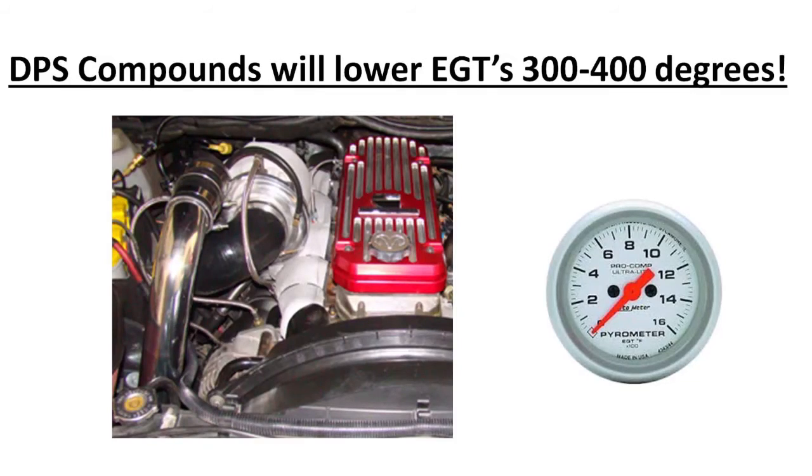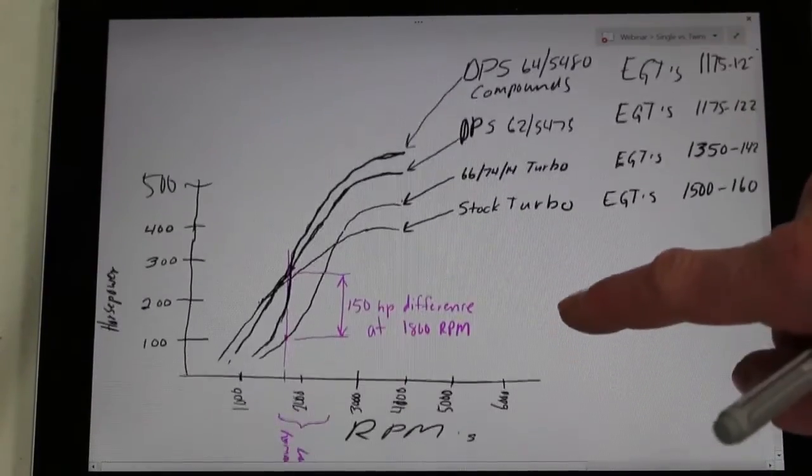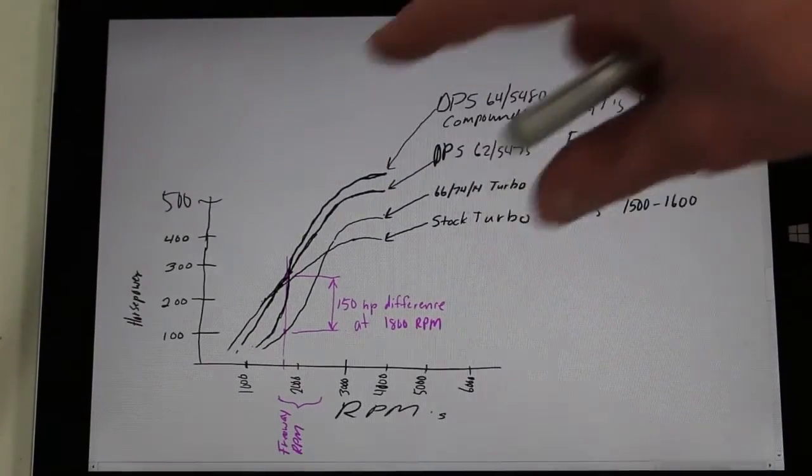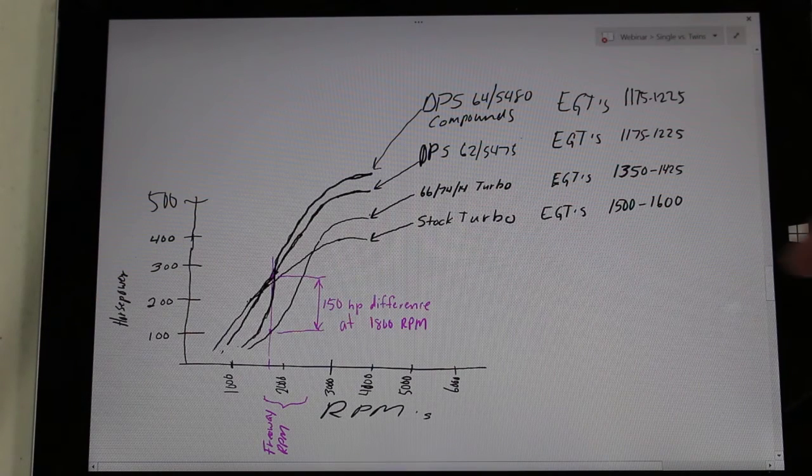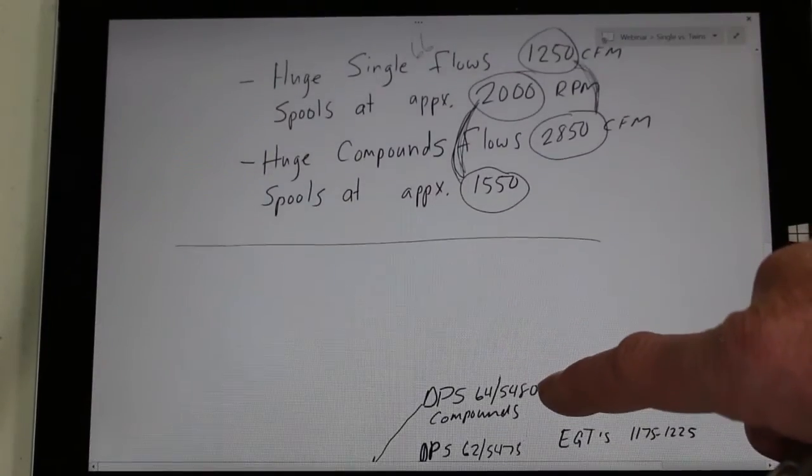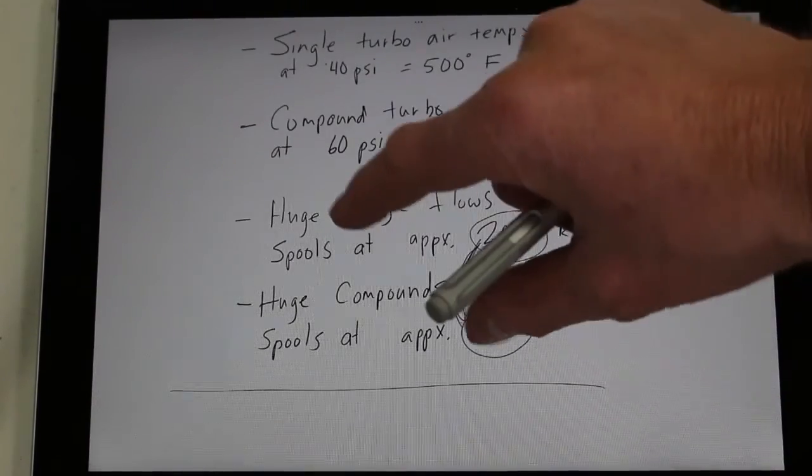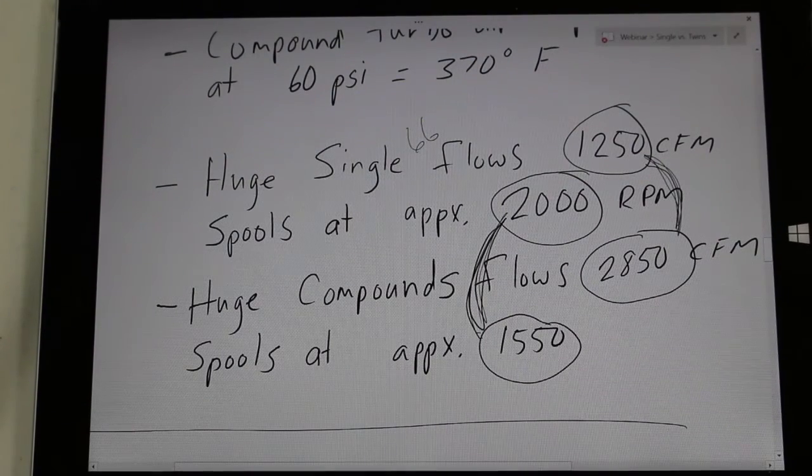The last huge benefit of the compound kits versus a huge single turbo that would even somewhat compete in handling the same horsepower. I'll show here in this example a single 66 turbo that flows approximately 1250 CFM. And that turbo on a 5.9 Cummins will usually spool around like 2000 RPMs or sometimes even a little higher. In contrast, we take one of our large compound kits, our 6470 112 over an S480 for example. It will flow 2850 CFM and spool right around 1550 RPMs.